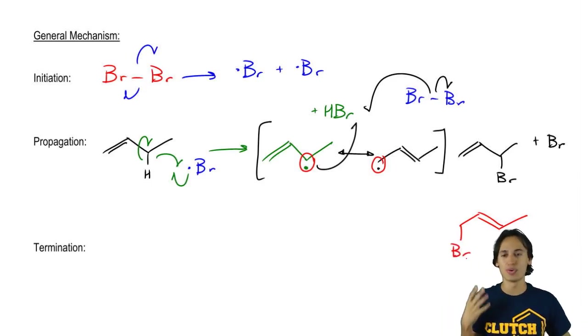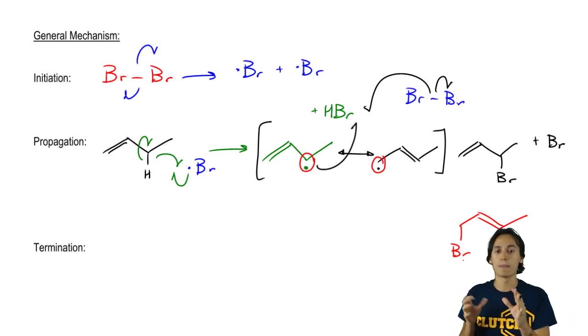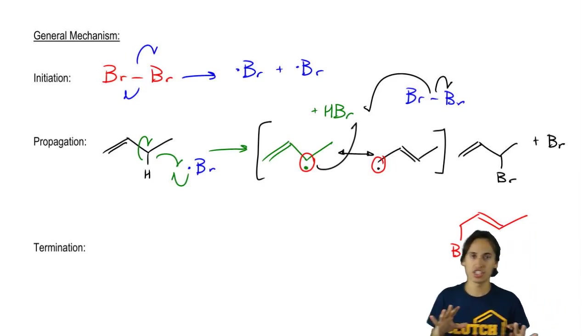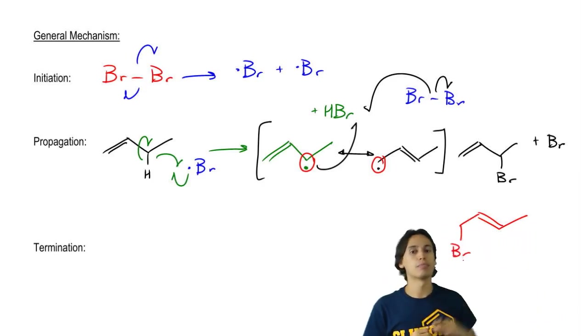This is one of the complications of allylic halogenation. If your double bond isn't perfectly symmetrical, you're going to wind up getting a combination of products. We don't deal with major and minor in this section. We're just going to say we're going to get both of them. So it kind of sucks.